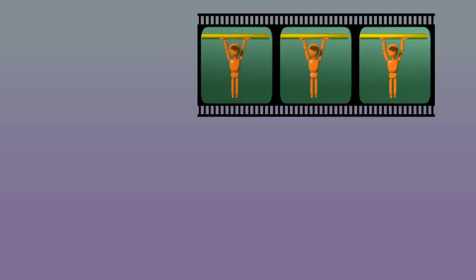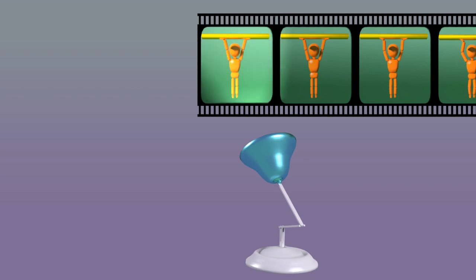Let's say that we have a two-dimensional world, where a two-dimensional person is exercising. This looks very much like a movie. In ancient times, movies came on film strips, and a projector would highlight one frame at a time.